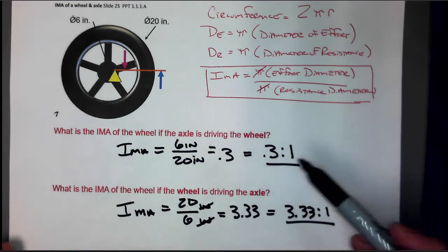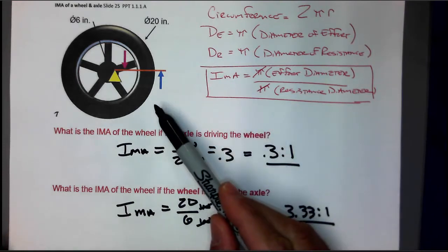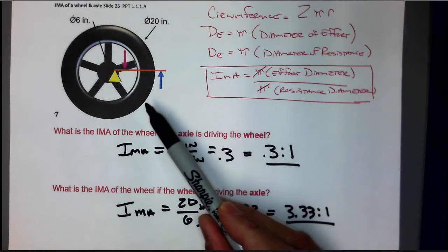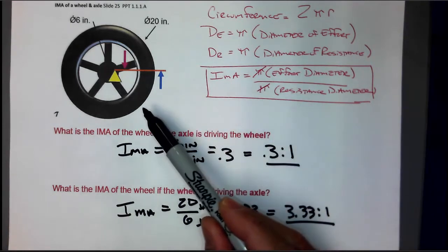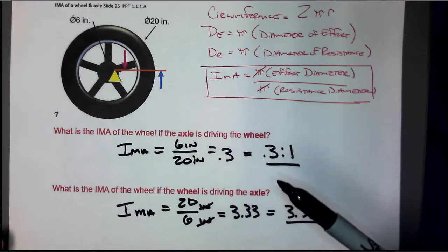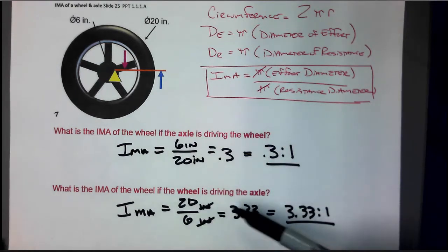It's easy to think about an axle driving a wheel because cars, motorcycles, any kind of vehicle that we have, the axle actually drives the wheel. But the question is, where do you really have a wheel that actually drives the axle? Where do you make the wheel drive the axle? Let's see if we have a couple examples.